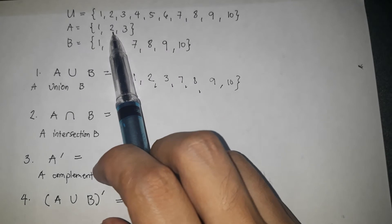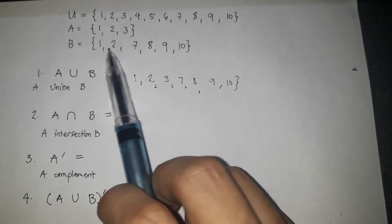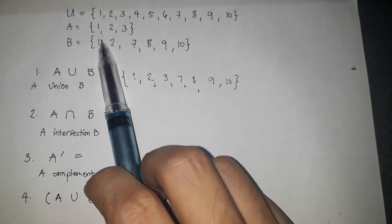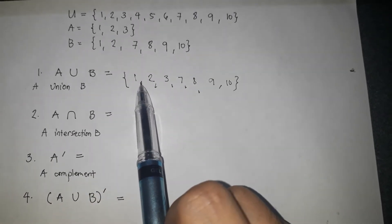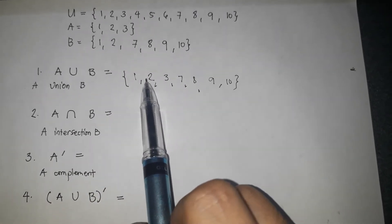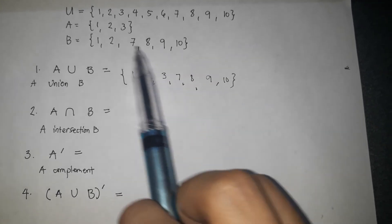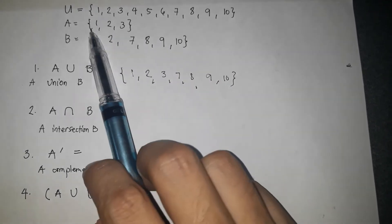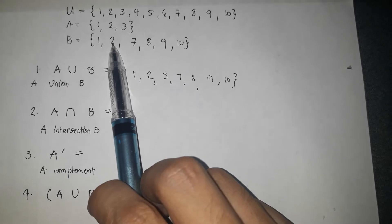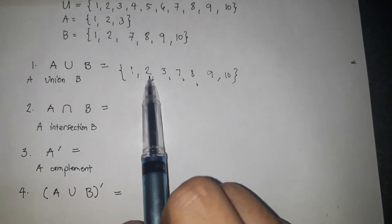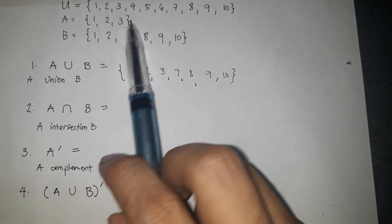Again, the elements are 1, 2, 3, 7, 8, 9, 10. You are not going to write two elements in the same set — it should be one. For example, since both sets have 1 and 2, you just write them once. So these are the union of A and B — you just combine all the elements.